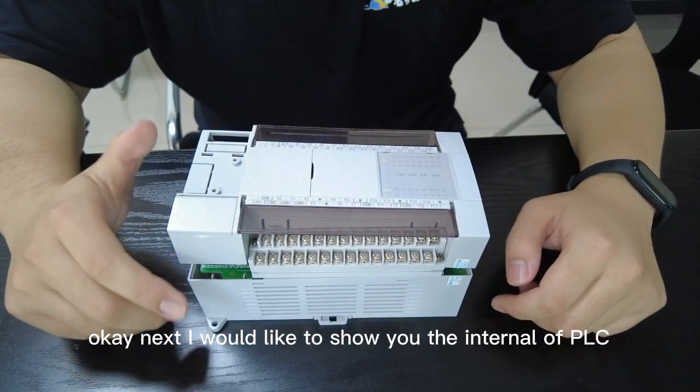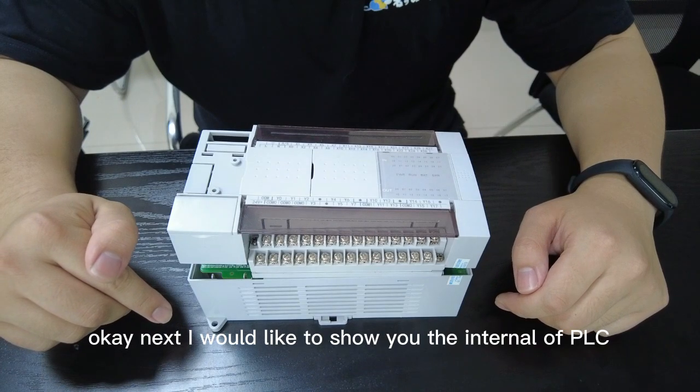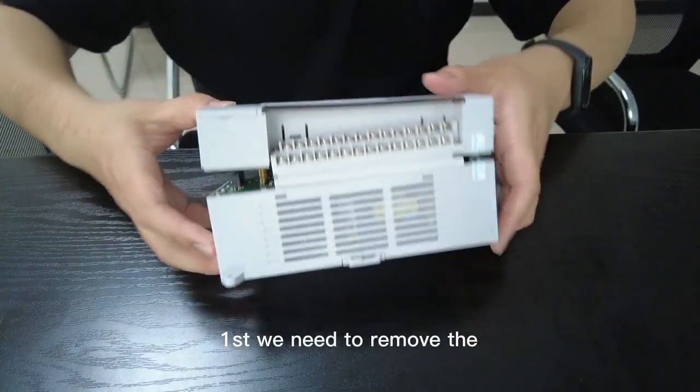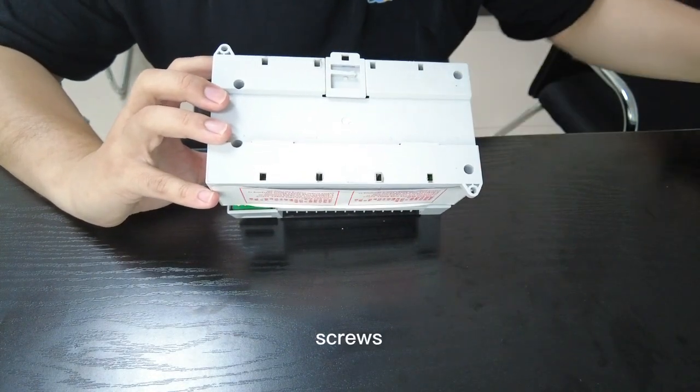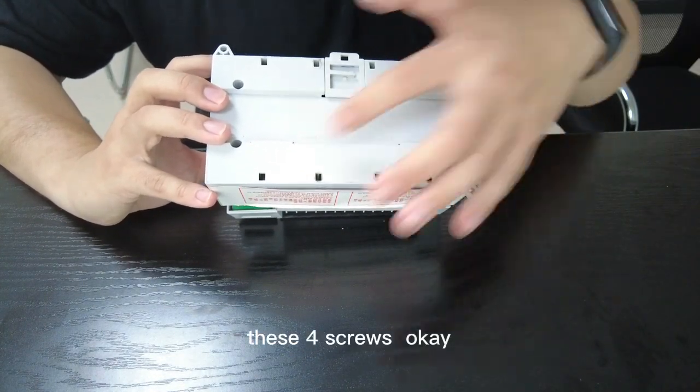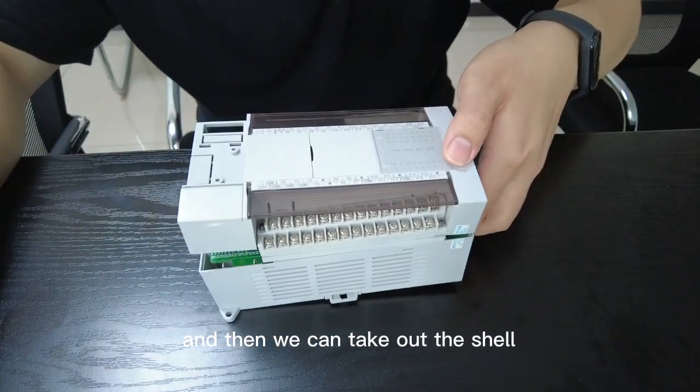Okay, next I would like to show you the internal of the PLC. First, we need to remove the screws, these four screws. And then we can take out the shell.